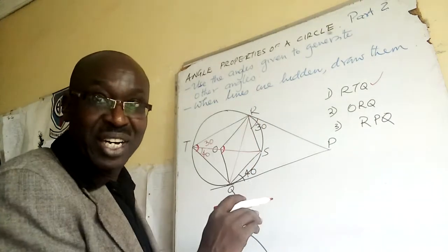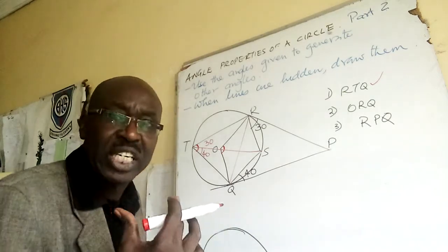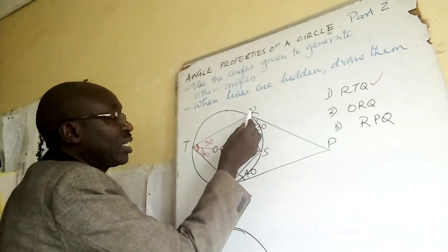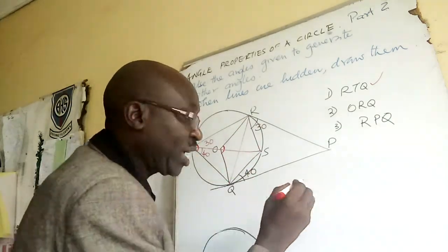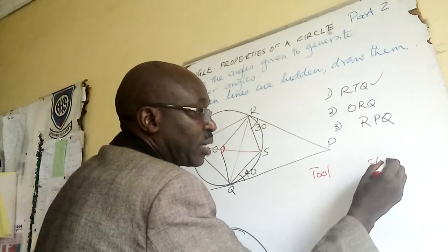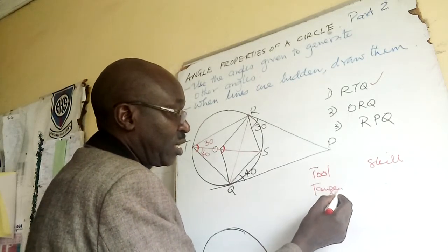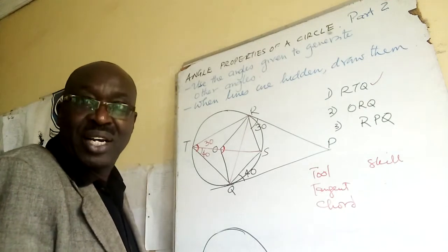Without looking at the question, you will have already answered. What else do I know? TQSR is a cyclic quadrilateral. So you have to identify the tool and then you apply the skill. So the tool we've had here, we have had a tangent, we have chord.